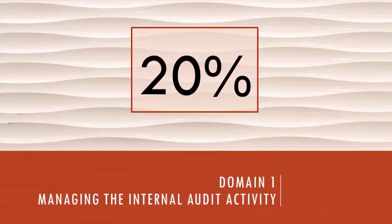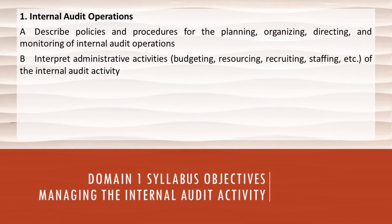Here are the syllabus objectives for Domain 1. Number 1: Internal Audit Operations. A. Describe policies and procedures for the planning, organizing, directing, and monitoring of internal audit operations. B. Interpret administrative activities such as budgeting, resourcing, recruiting, staffing, etc. of the internal audit activity. Both of these are at a basic level of understanding.